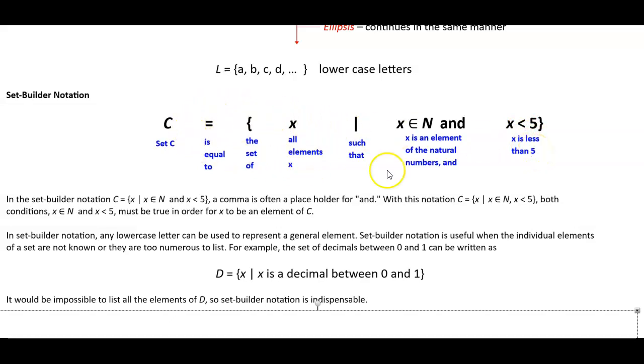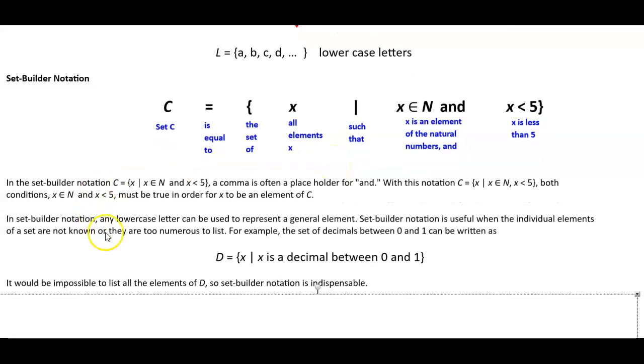So again, this is how you're reading set builder notation. Now in set builder notation, again, C, which is equal to x such that, or all x such that x is an element of natural numbers and x is less than 5.